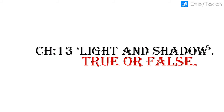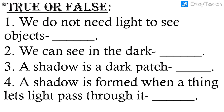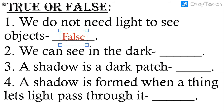Next, chapter number 13, Light and Shadow. In this chapter we learned about light, shadow, and how long a shadow is. Number one: We do not need light to see objects — false. We do need light to see objects; without light it will be dark and objects will not be visible properly.